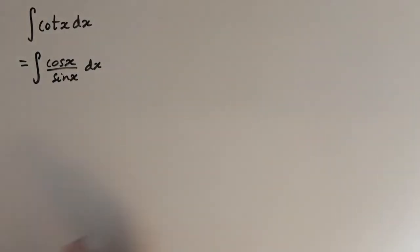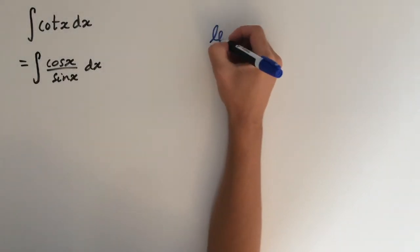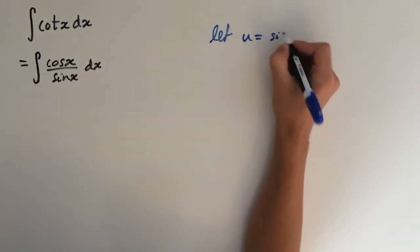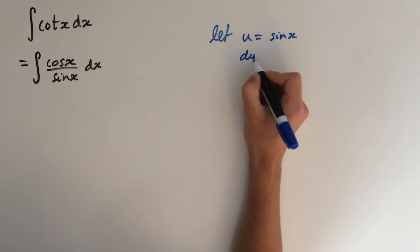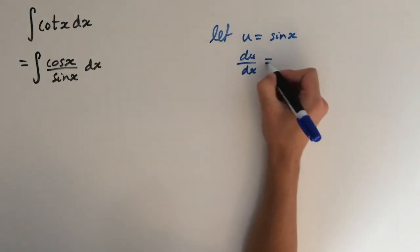And now we're going to use substitution. So we're going to let u equal sin x. Now we differentiate. So du over dx equals cos x.